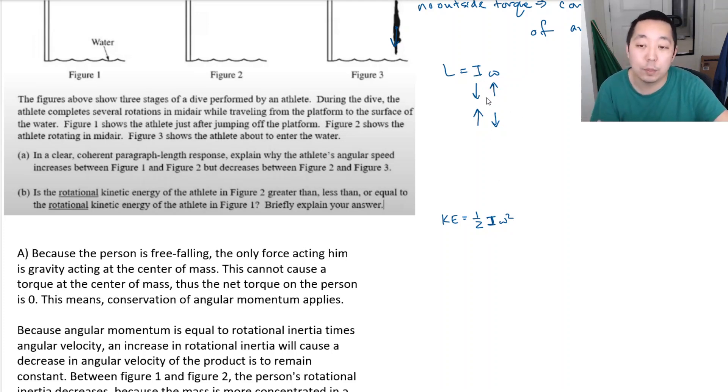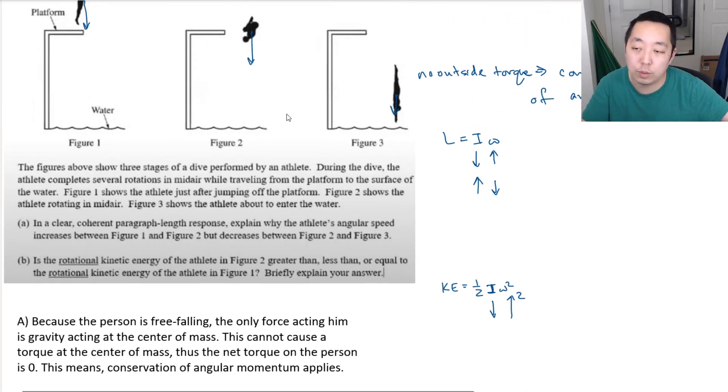So one of the things you could say is like, I goes down, but omega goes up. And they kind of go up by the same scale. But when omega goes up, in the energy sense, it increases more than I went down. So in the kinetic energy, I went down, but omega goes up by the same amount, like squared, basically. Right? That's kind of like the scenario that's happening.